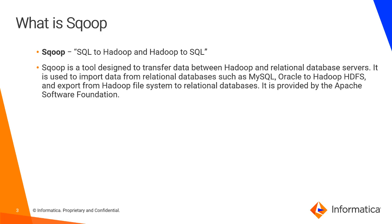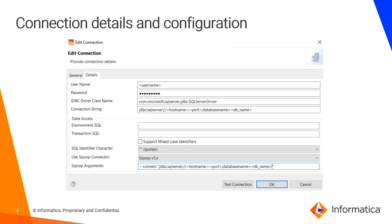This is a screenshot taken from the admin console, which we'll see in detail in the demo. Here we have to specify the username and password for the SQL Server and the JDBC driver class name. The class name should be com.microsoft.sqlserver.jdbc.SQLServerDriver, and you have to specify the connection string, which you can get from your SQL Server administrator. There is also an option to use a Sqoop connector.